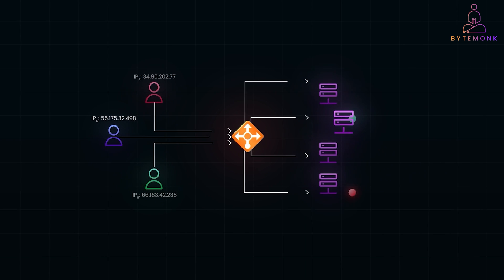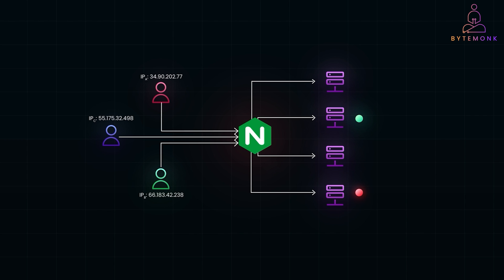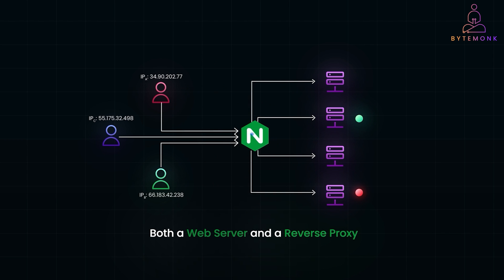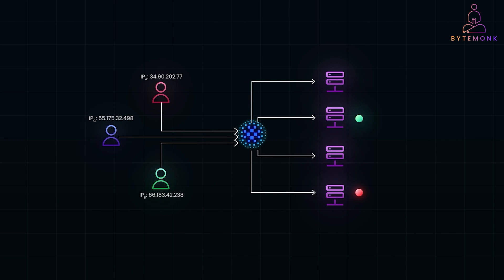Let's look at a few examples. Nginx is a popular web server and reverse proxy for handling high-traffic websites. It can act both as a web server and a reverse proxy, managing millions of requests with ease. HAProxy is known for its speed and reliability, and it's often used in enterprise environments — such as financial or enterprise-grade applications — where uptime is critical.